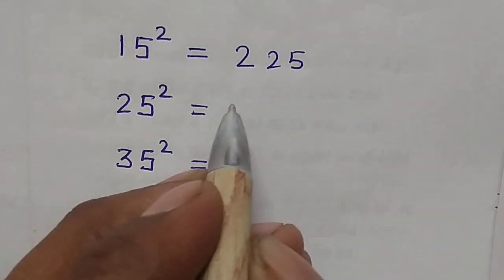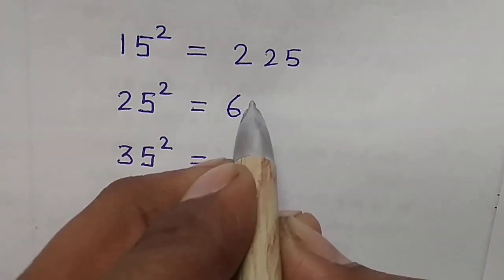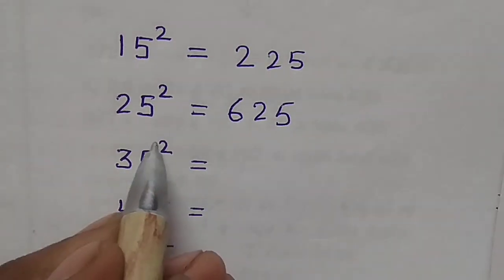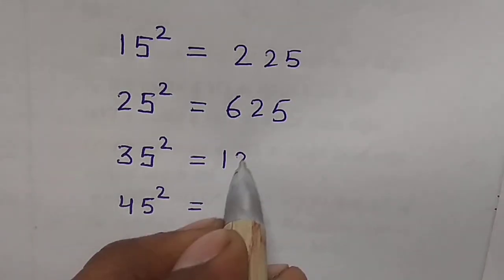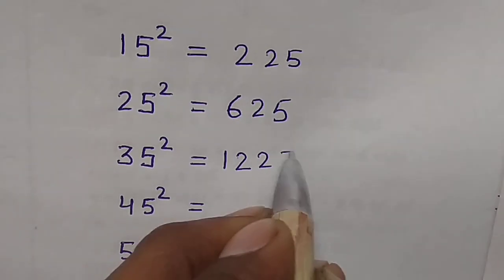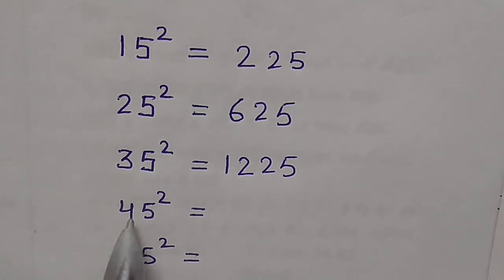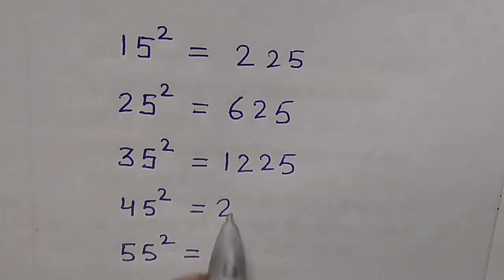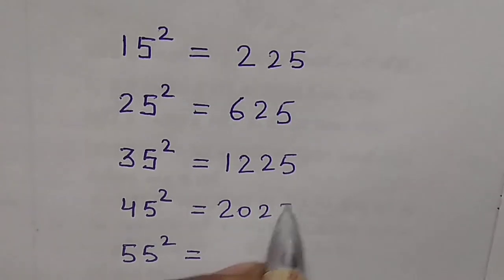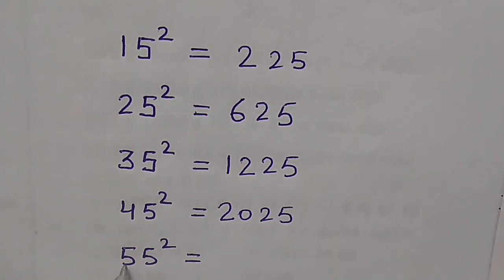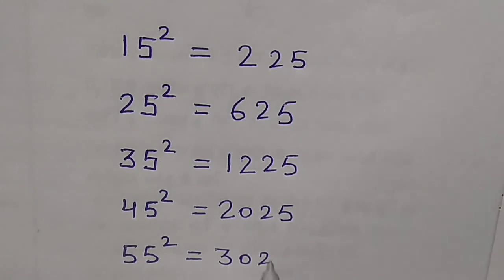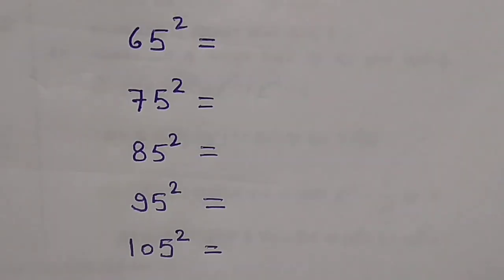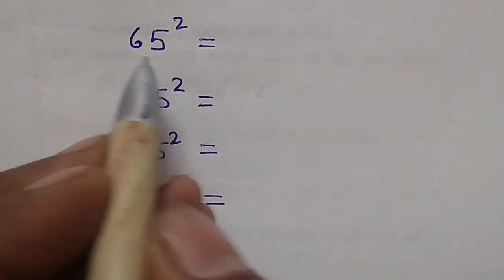3, 3 times 4 is 12 — so 35 squared is 1225. 4, 4 times 5 is 20 — so 45 squared is 2025. 5, 5 times 6 is 30 — so 55 squared is 3025. 6, 6 times 7 is 42 — so 65 squared is 4225.